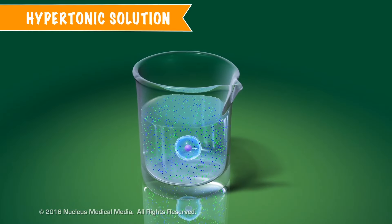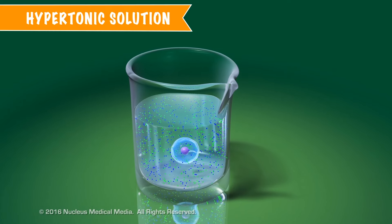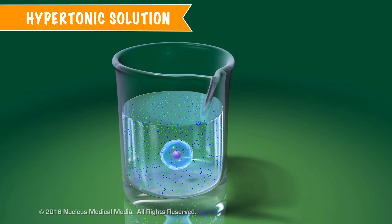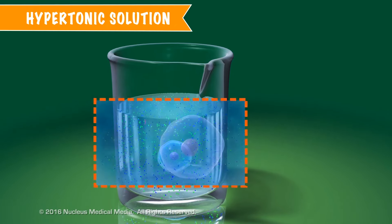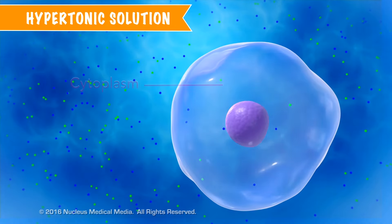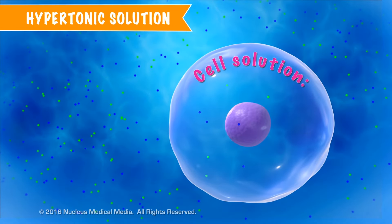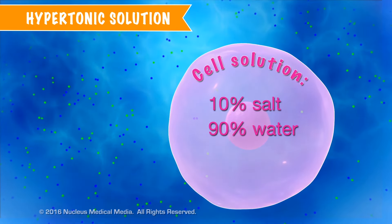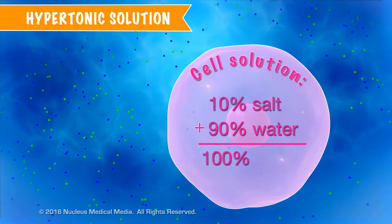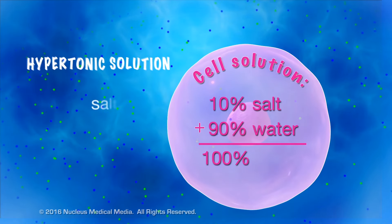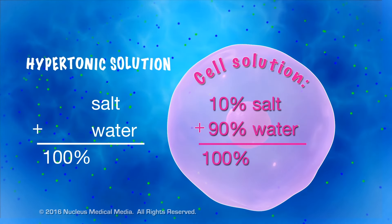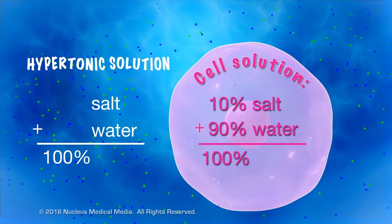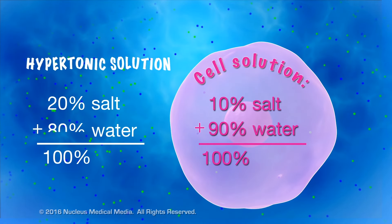We'll describe hypertonic solutions using this beaker of water with dissolved salt and a rather large cell submerged in it. To demonstrate water movement in and out of cells, we'll use simple numbers to illustrate concepts. Remember, the cell's cytoplasm is mostly water as well. In this example, let's say the cytoplasm inside the cell is a solution containing 10% salt, which means the other 90% is water. Percentages of substances within the cell must equal 100%, and the percentages of solute and solvent in the beaker must also add up to 100%. However, the solution in the beaker is a different concentration from the solution inside the cell — it's 20% salt and 80% water.